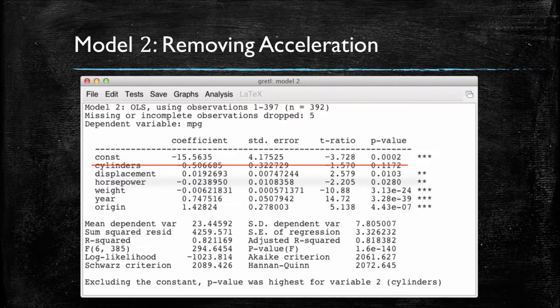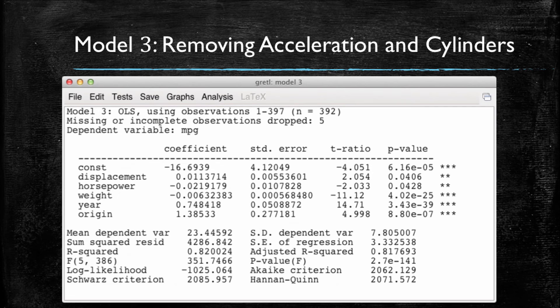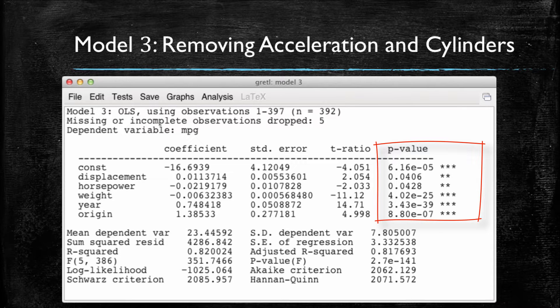We will now rerun our model, having removed the cylinders variable. Once we remove cylinders, we have a new model where all the variables have p-values less than 5%. So we can say that each individual variable, on its own, has a statistically significant relationship with the dependent variable.